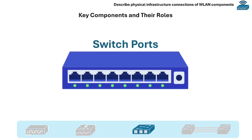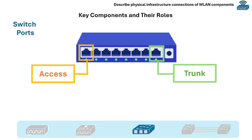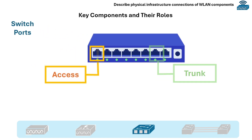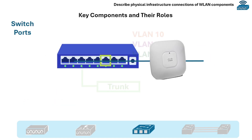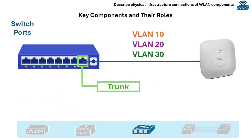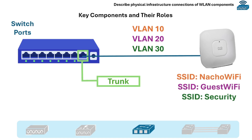Next are switch ports, and these can be access or trunk ports. For example, if an AP provides only a single SSID mapped to one VLAN, you can configure the switch port as an access port for that VLAN. A trunk port handles traffic for multiple VLANs — for example, when an AP carries multiple SSIDs, each SSID might be mapped to a different VLAN.